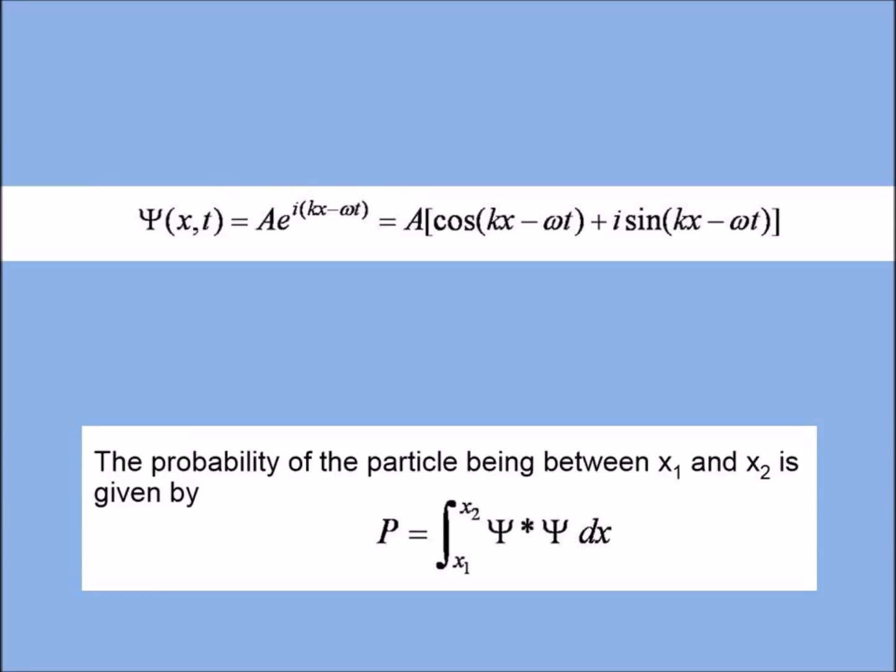Psi of x and t which depends on x and t is equal to A, which is normalization constant we will see in later videos, into e to the i, this is complex part of the function, into kx minus omega t, which can be simplified in cos and sin function. Probability is given in terms of integration of psi star psi into dx, or for the volume dx changes to dv or dx dy into dz.